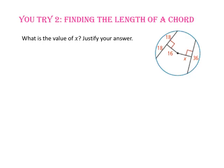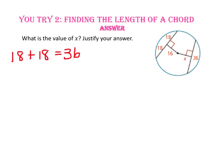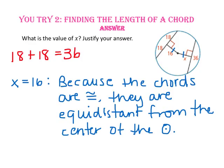Pause the video and do you try number 2. In this diagram, the length of this chord is 18 plus 18, or 36 units long. Since this chord is also 36 units long, we know that each chord is the same distance from the center of the circle. So, X equals 16. Because the chords are congruent, they are equidistant from the center of the circle.